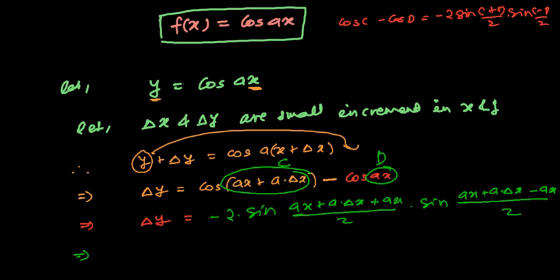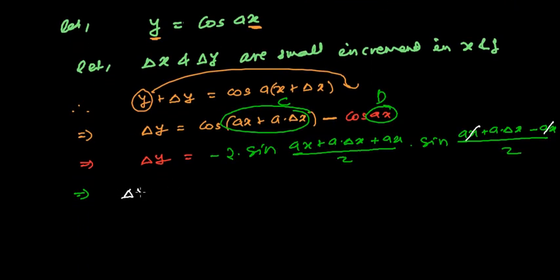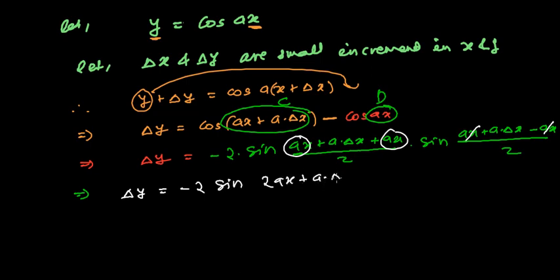Alright, my dear friend, here you can cancel a few things — just two things: plus ax and minus ax. In the next step we can write: minus 2 sine of (2ax + a·delta x)/2 times sine of (a·delta x)/2.